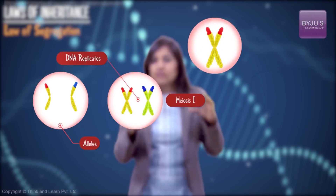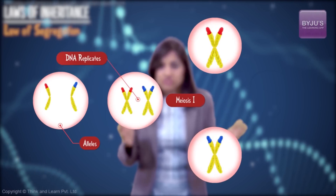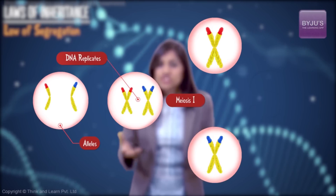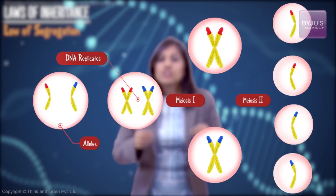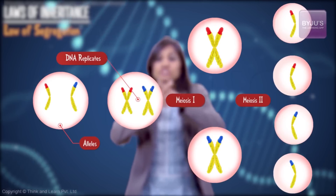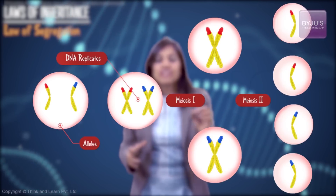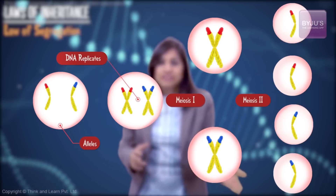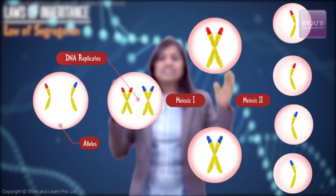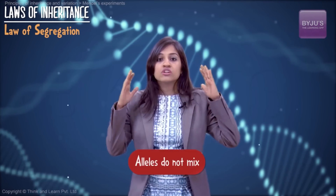Specifically during the gamete formation stage, in the second division of meiosis, the two copies of a chromosome separate from each other, causing the individual alleles located on them to also get separated. The essence is that the alleles do not mix — so the gamete is always pure for a character, although the zygote may or may not be.